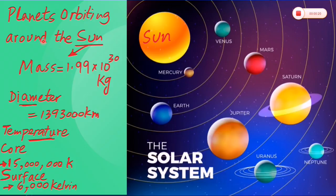The mass of the Sun is 1.99 times 10 to the power 30 kilograms, and its diameter is 1,393,000 kilometers. Temperature of its core is 15 million Kelvins, and surface temperature is 6,000 Kelvins.